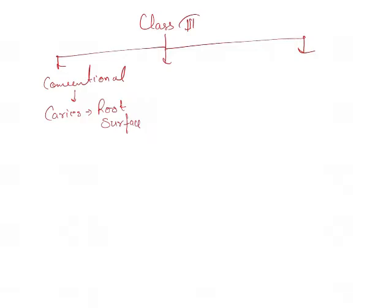The second thing is conventional with bevel. The conventional with bevel is used when the cavity is large and it has a minimal margin.